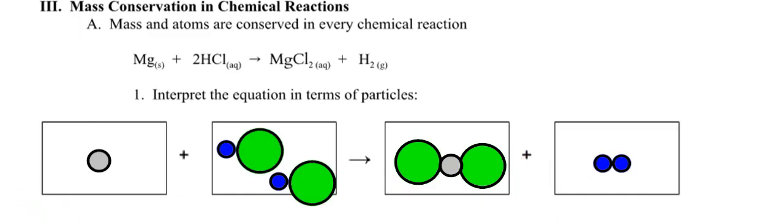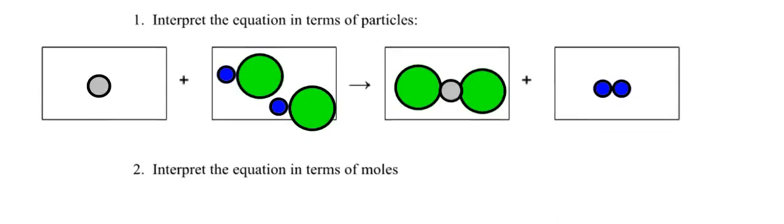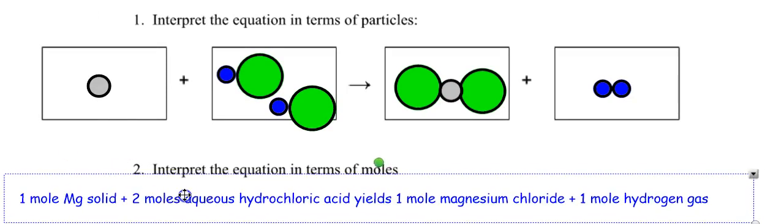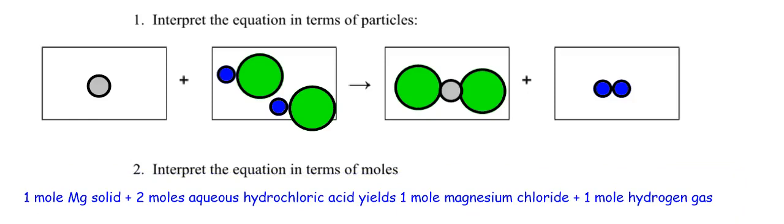So now it says interpret the equation in terms of moles. How many moles of magnesium do I have? One. How many moles of hydrochloric acid do I have? Two. It yields one mole of magnesium chloride and one mole of hydrogen gas.